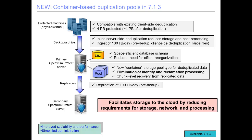Container storage pools are new in 7.1.3, and the idea is to really simplify storage pools — once we put the data out there, we basically don't fuss with it. It includes inline dedupe and the ability to encrypt data on the server side, so if you are storing it in an off-premise cloud, you know it's secure. In addition, we can replicate the data to a second Spectrum Protect server, so that if your primary server went down from a disaster or hardware failure, your Spectrum Protect clients could still restore from the secondary server.